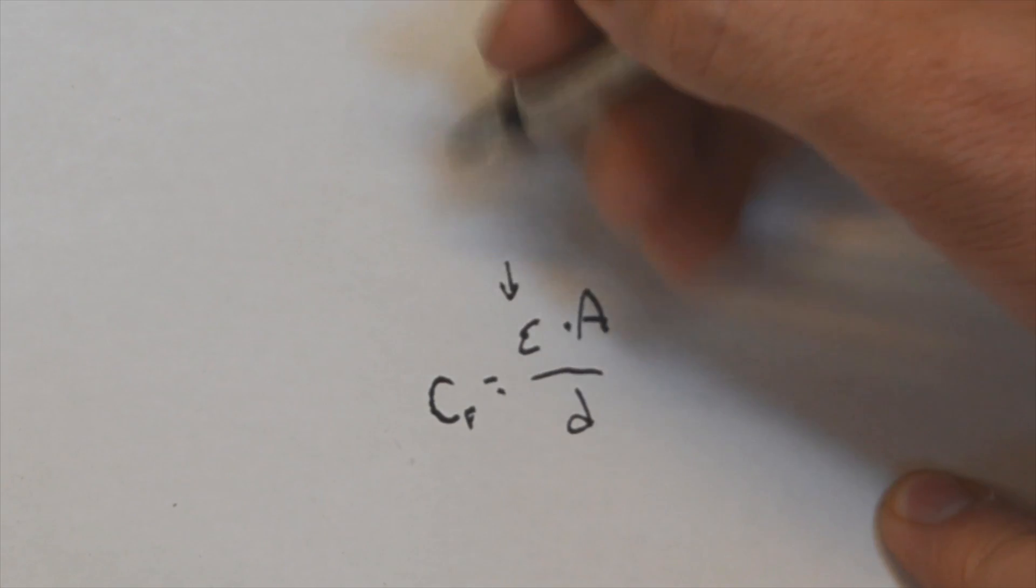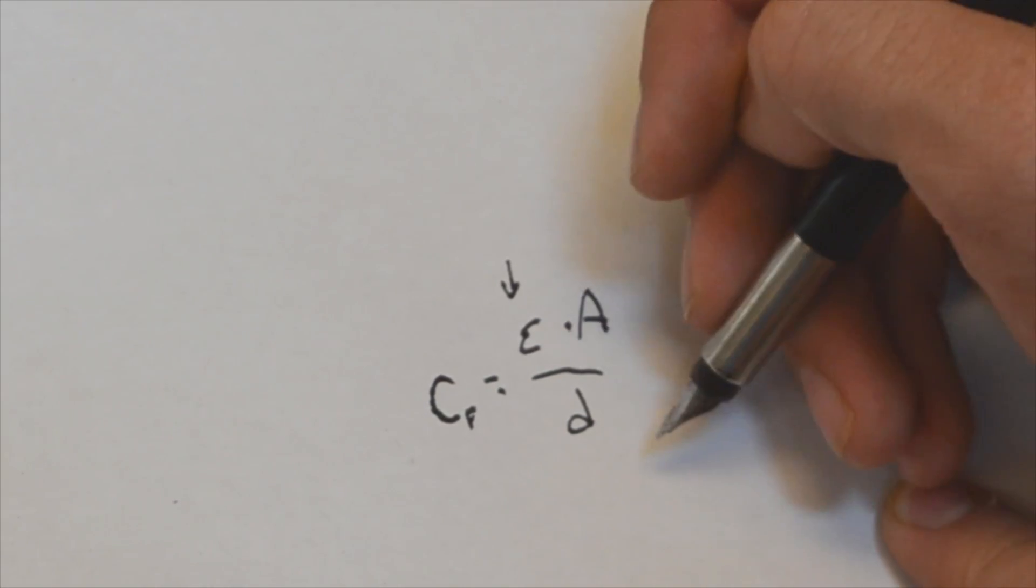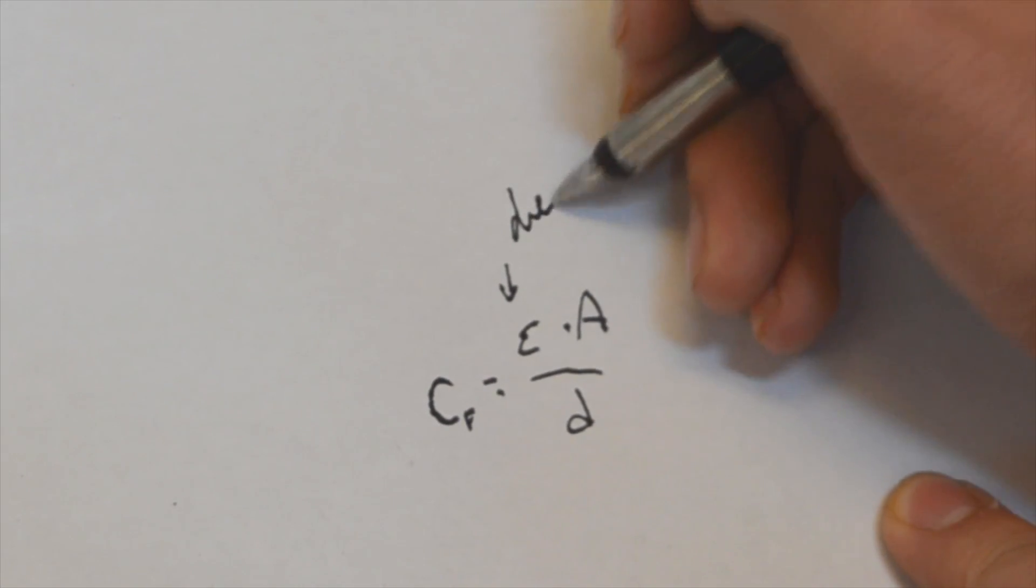So capacitance is a force between two electrical plates. The formula for capacitance is C = εA/d. Epsilon represents the dielectric.